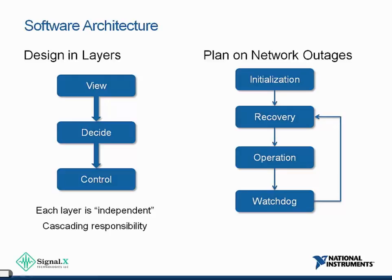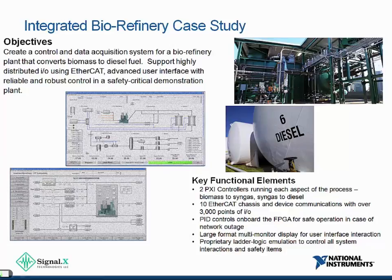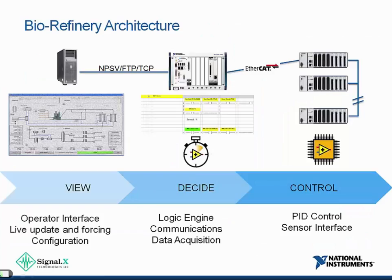To illustrate these hardware and software concepts, here is a case study of a control system we built for a biorefinery that converts biomass like wood chips into diesel fuel. This was a highly distributed control system using the FPGA expansion chassis approach: two PXI controllers run the entire process and talk to a total of 10 EtherCAT chassis where PID control is maintained. There were over 3,000 points of I/O — a large, mission-critical, and safety-critical system. The architecture followed the three layers: View, Decide, and Control.